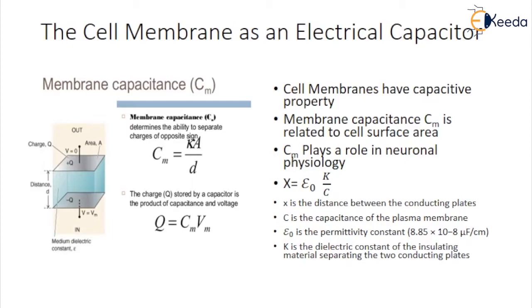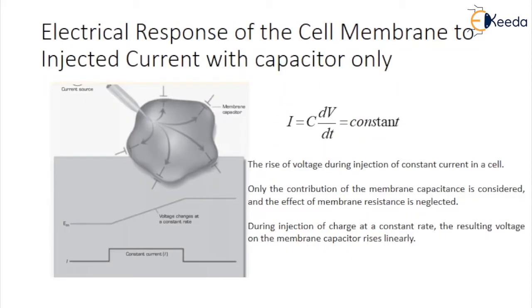Electrical response of the cell membrane to injected current. Many electrical signals in nerve cells arise when ion channels open in the plasma membrane, allowing flow of electric current carried by ions to move across the membrane and alter the membrane potential of the cell. This situation can be experimentally simulated by placing a microelectrode inside a cell and injecting charge into the cell through the microelectrode as shown in the figure. The response of the cell to injected current considering only the capacitance of the cell membrane.